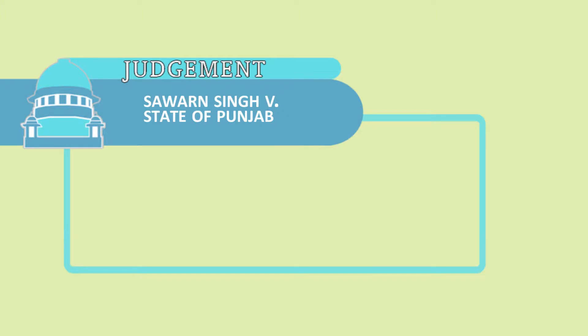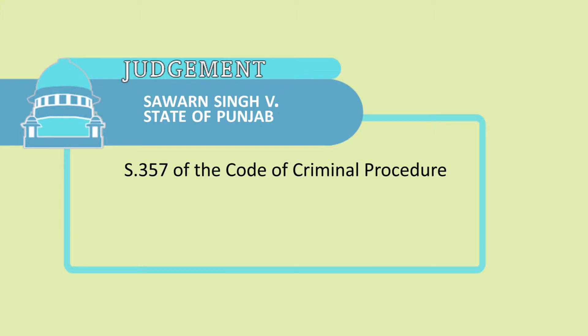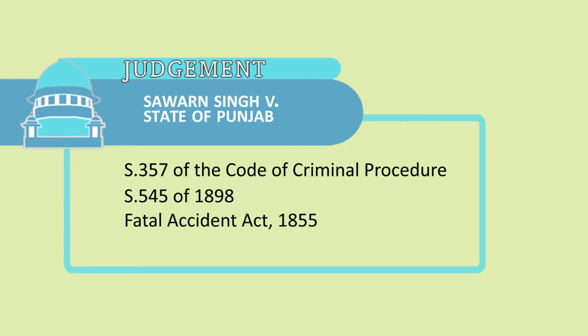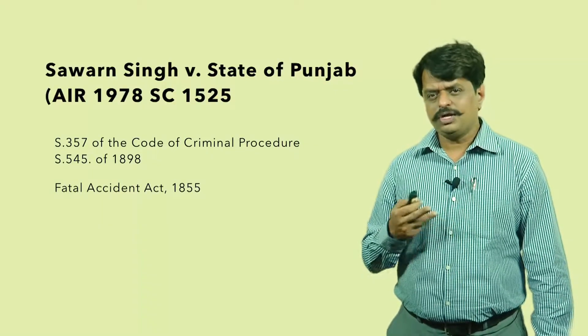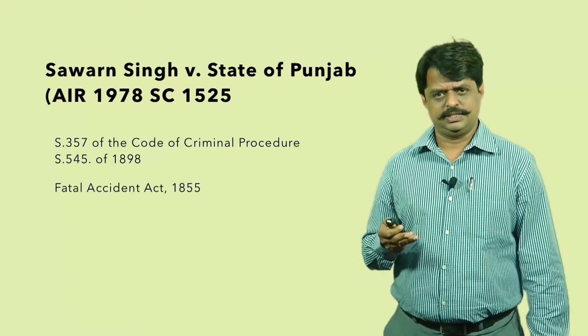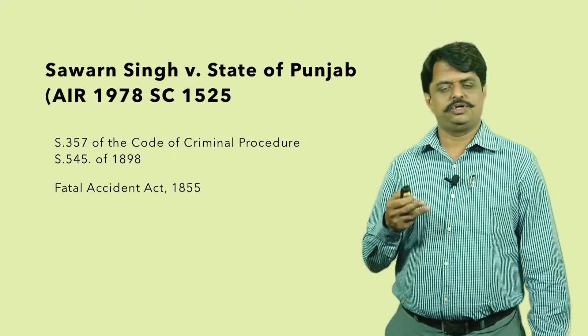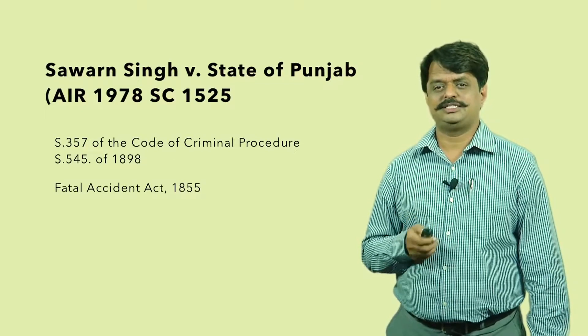The judiciary has also stepped in substantially in protecting the rights of victims. Section 357 was interpreted in Swaran Singh v. State of Punjab, where the court brought a relationship between Section 357 of the CrPC, Section 545 of the old CrPC legislation, and the Fatal Accidents Act 1855. The court held that while implementing the provisions of Section 357, the accused's capacity to pay compensation must be determined — if compensation is ordered against a poor offender, the object of Section 357 would not be met. There is a need to assess the capacity to pay.